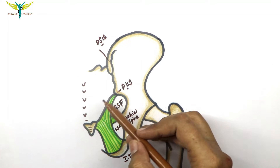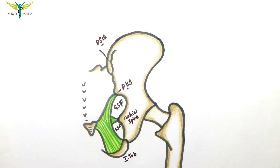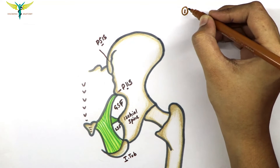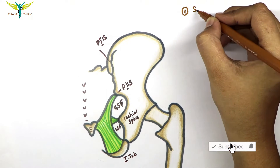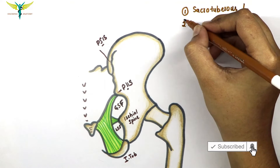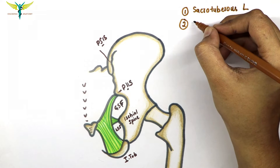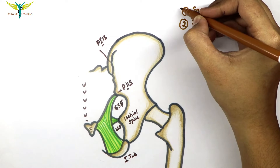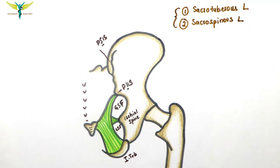Studying about the gluteal ligaments is very necessary because of the most important structures passing in this region. The most important gluteal ligaments are: the first one is the sacrotuberous ligament, and the second being the sacrospinous ligament. These two ligaments are called the gluteal ligaments.